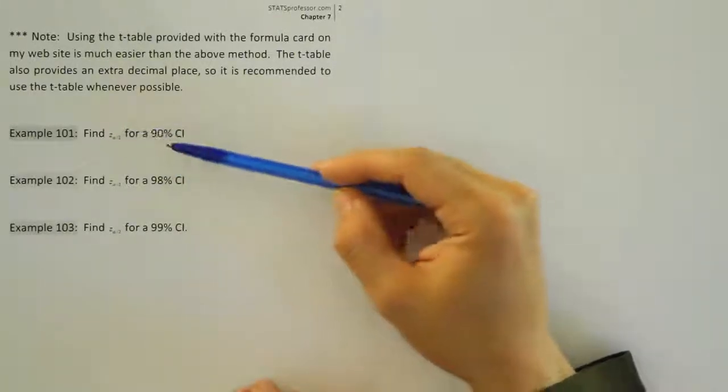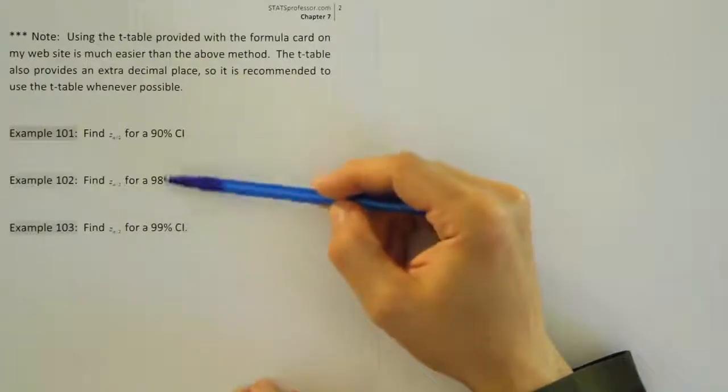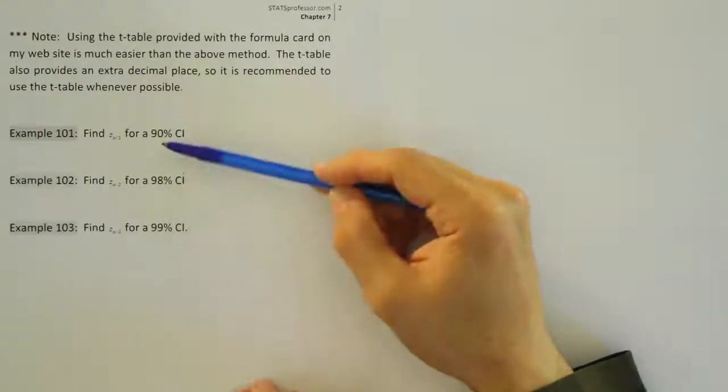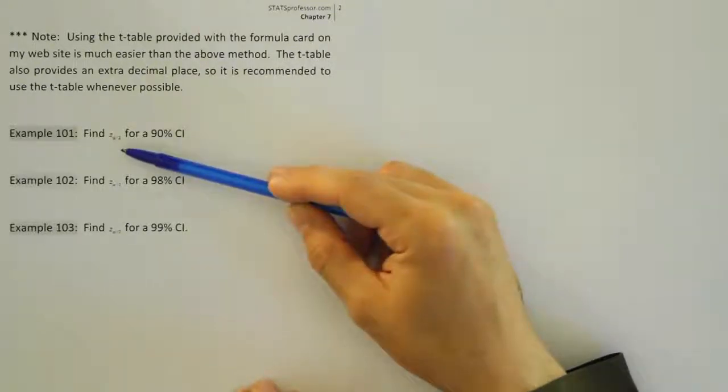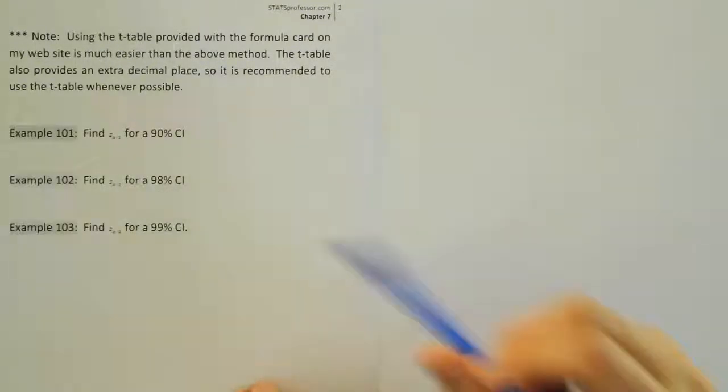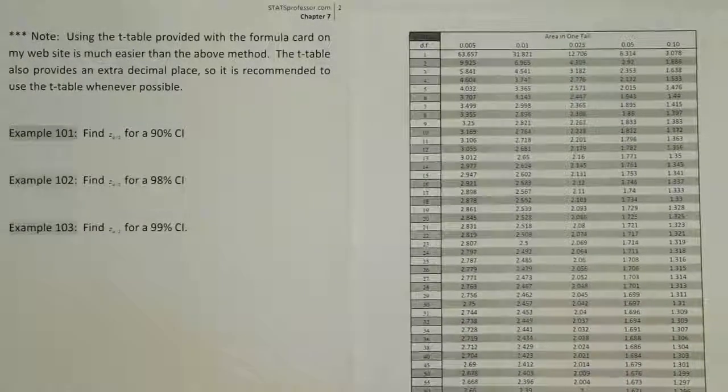it turns out that because the confidence levels are these nice values of 90, 98, 99, we can use the t-table to find those critical z values. There's one line on the bottom of a t-table that always has z-scores. So let's look at a t-table that I use in my classes.